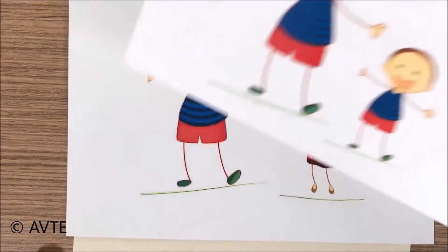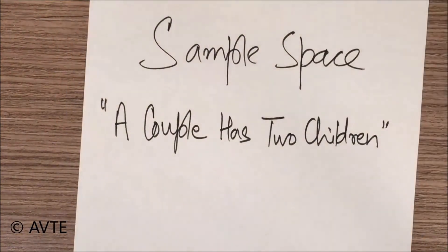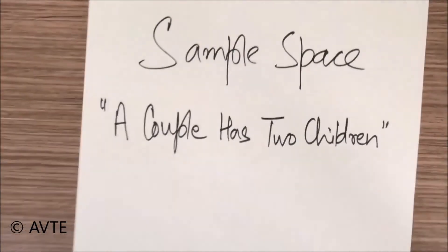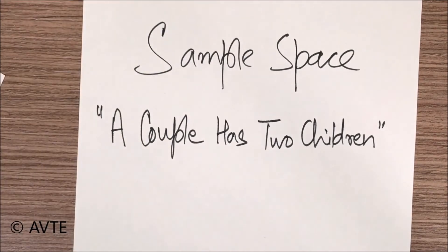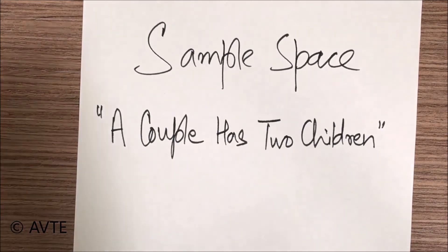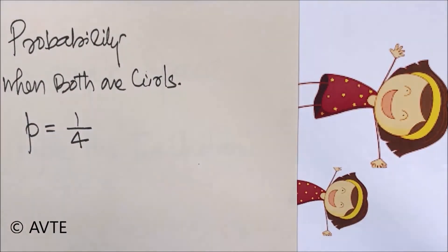There are four possibilities, and the question can further be: find the probability when both are girls. It will be very simple because probability is number of favorable cases divided by the total cases. So in that case, the probability that both are girls is one upon four.